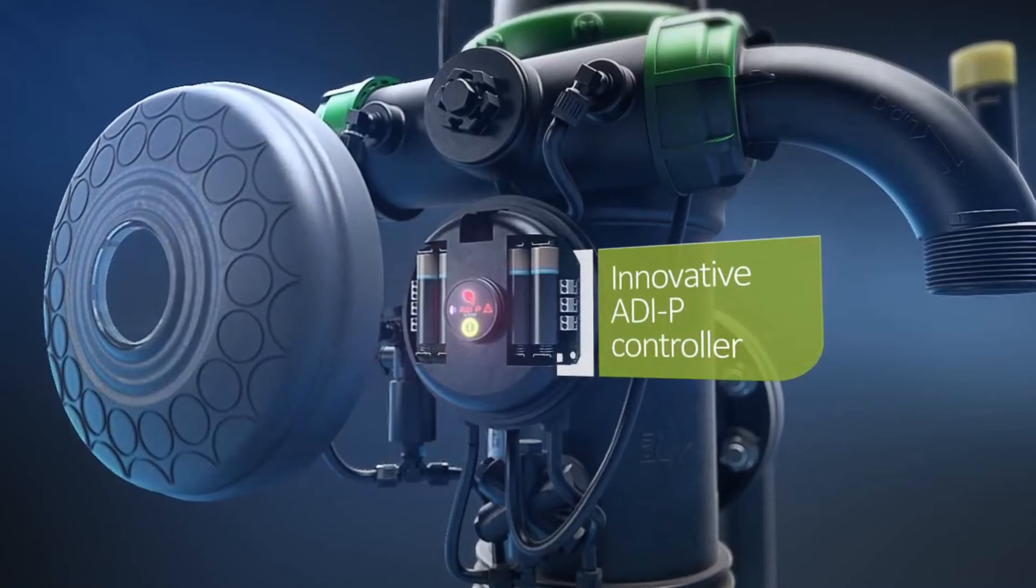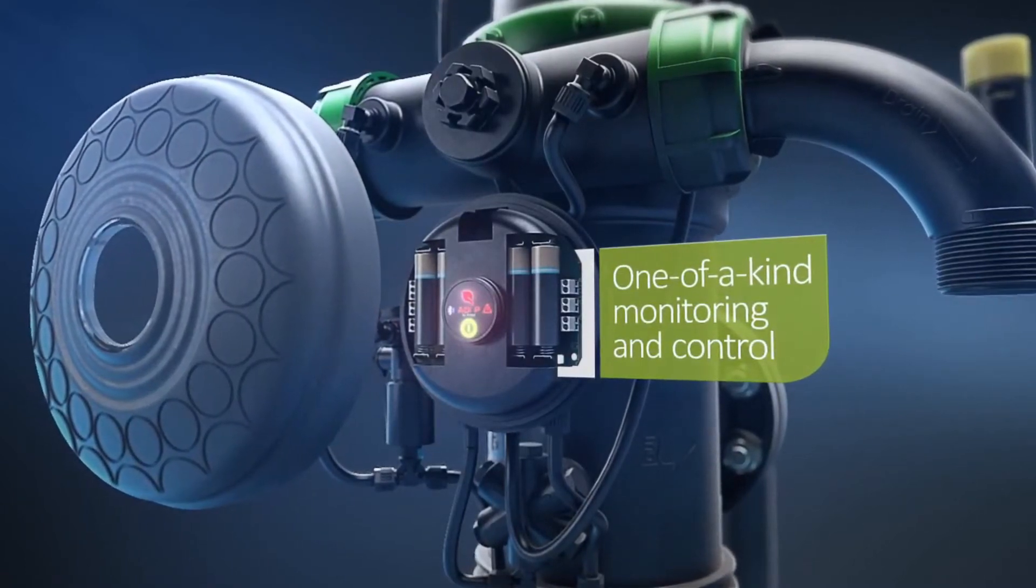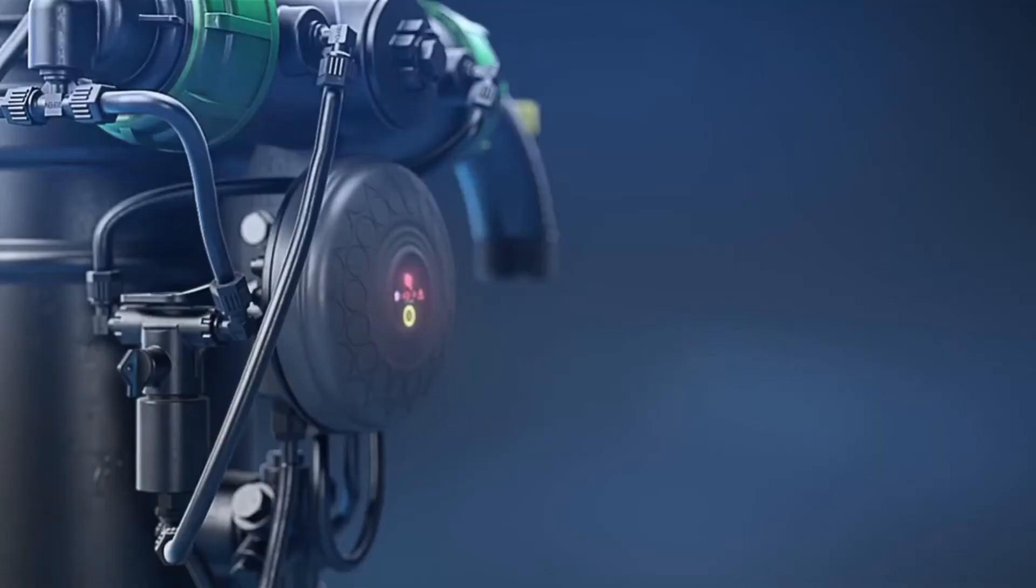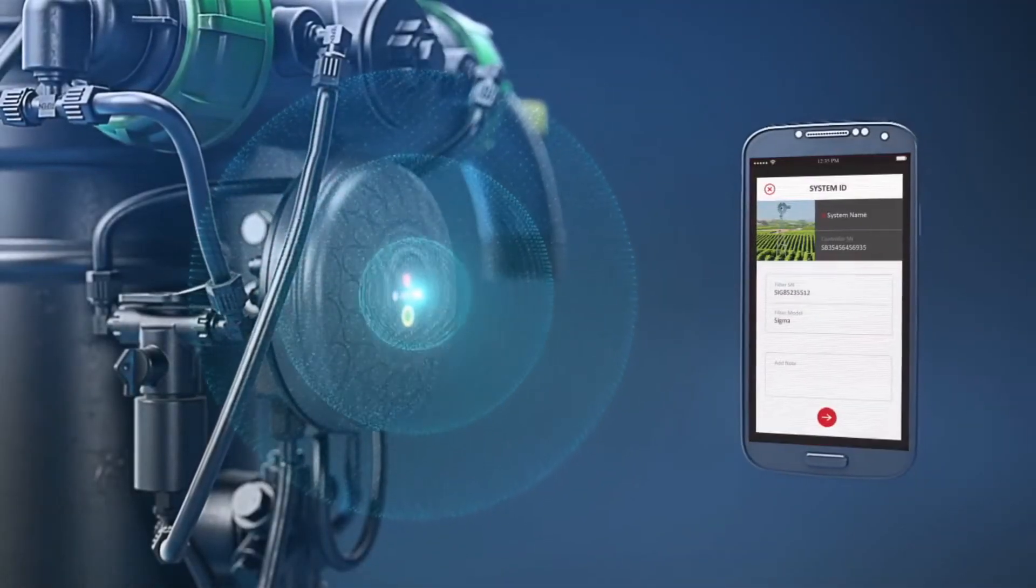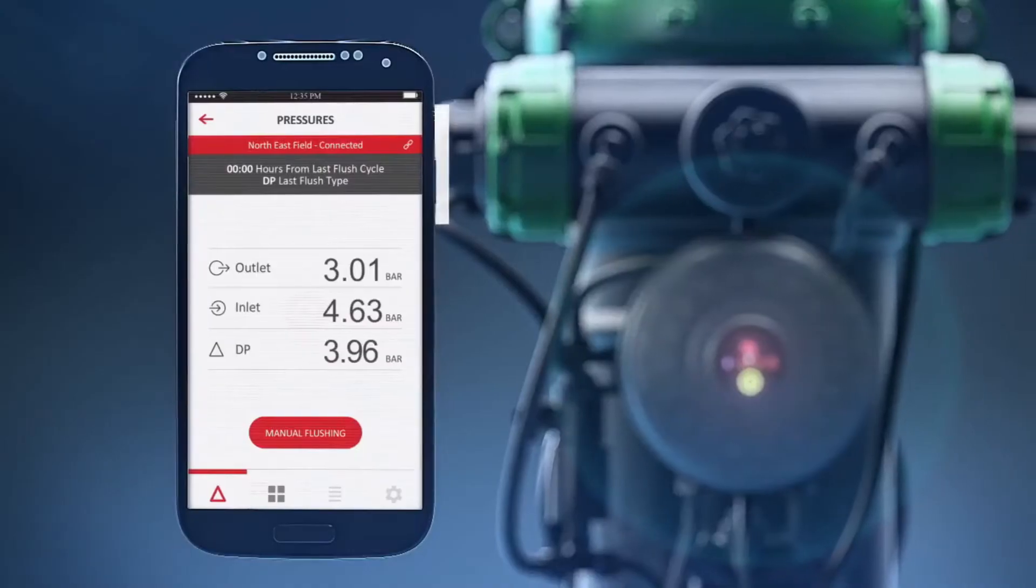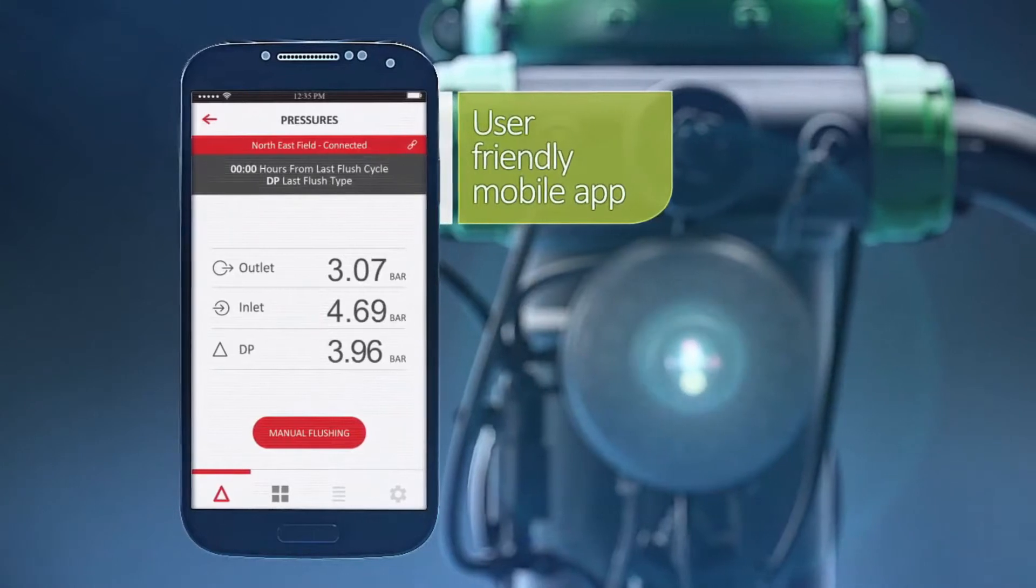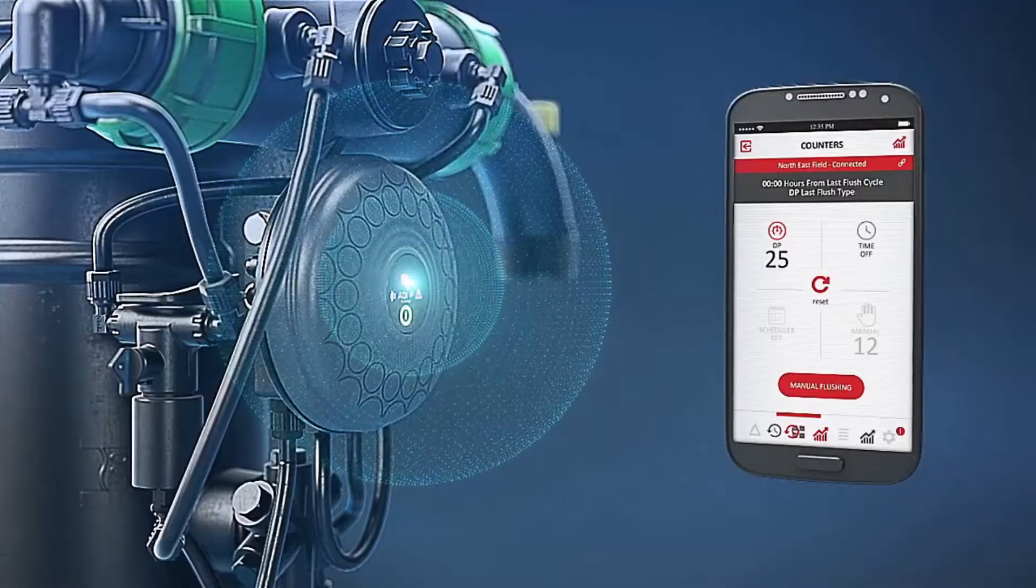The Mini Sigma offers the innovative ADP controller for one-of-a-kind monitoring and control functionality. Developed by AMIAD specifically for its filters, the ADP interacts with AMIAD's advanced user-friendly mobile app to provide maximum filtration performance data.